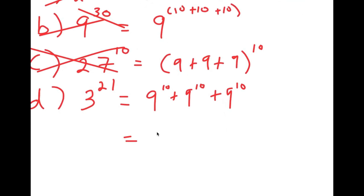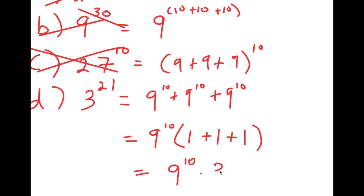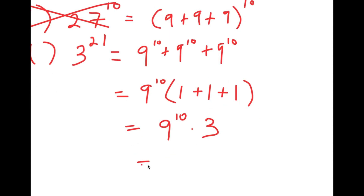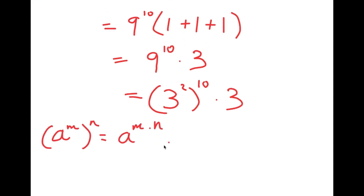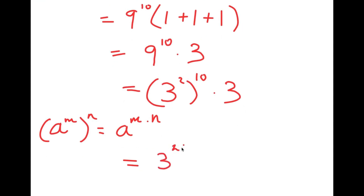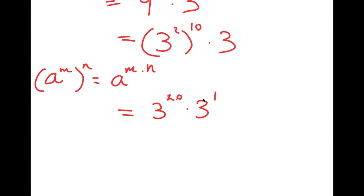I'm going to factor out 9 to the power of 10, giving 9 to the power of 10 times (1 plus 1 plus 1), which equals 9 to the power of 10 times 3. Now, 9 equals 3 squared, so this becomes 3 squared to the power of 10, times 3. Using the property (a^m)^n = a^(m·n), we get 3 to the power of 20 times 3 to the power of 1. Adding the exponents gives us 3 to the power of 21.